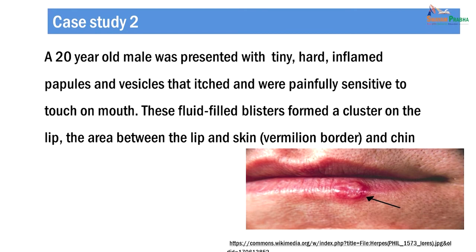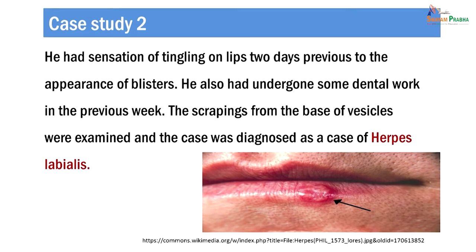Let us have another clinical case example of recurrent herpes labialis. A 20-year-old male presented with tiny inflamed papules and vesicles that itched and were painfully sensitive to touch. These fluid-filled blisters were present on the vermilion border and on the chin. He had a sensation of tingling on lips two days prior to the appearance of the blisters and gave history of having undergone dental work in the previous week. Scrapings from the base of the lesions were examined and the case was diagnosed as herpes labialis. The dental work had probably acted as a provocative stimulus, resulting in recurrence of herpes infection.